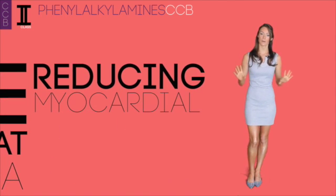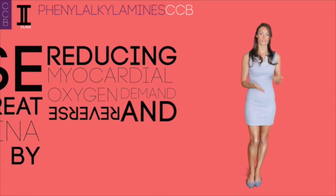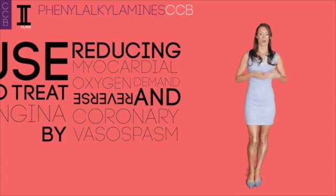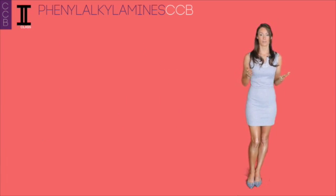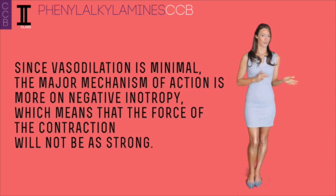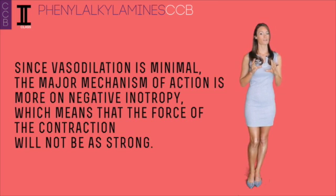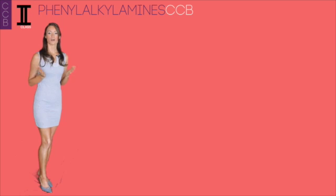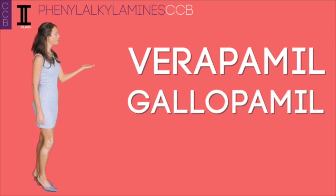The second class is phenylalkylamines, which are used to treat angina by reducing myocardial oxygen demand and reversing coronary vasospasms. Unlike the dihydropyridines, phenylalkylamines cause less systemic vasodilation and therefore less reflex tachycardia. Since vasodilation is minimal, the major mechanism is a negative inotropic effect — meaning the force of contraction will not be as strong. This class is contraindicated with beta blockers and includes verapamil, galopamil, and fendiline.